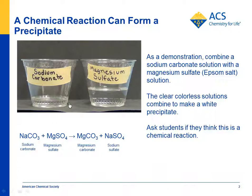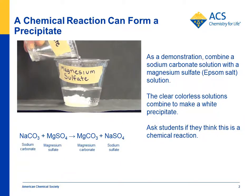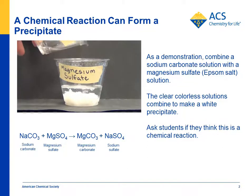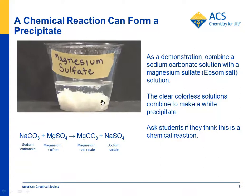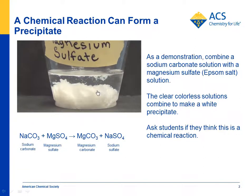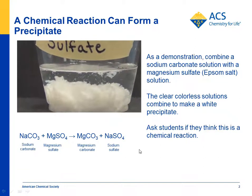As a demonstration, you can combine a sodium carbonate solution with a magnesium sulfate solution and see what happens. Students will see that these are clear colorless solutions. You can tell them what you used to make them and show that a precipitate or solid forms. You could stir it up and show students that it won't dissolve.